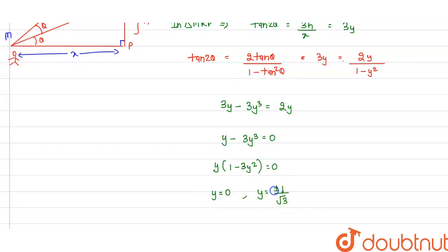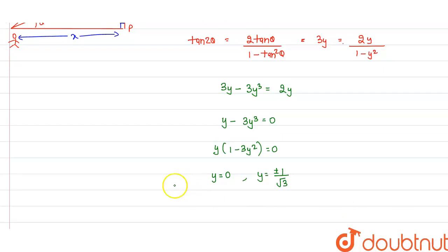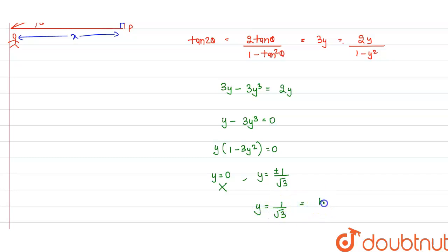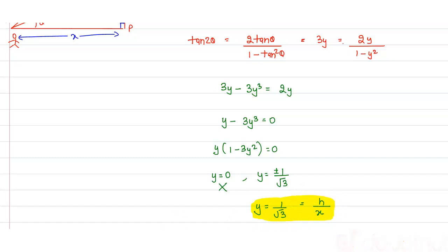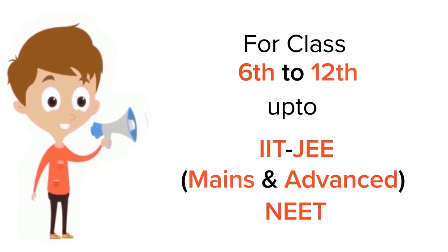My y value can't be negative because y equals height upon x, and height upon x can't be negative. It also can't be 0. So my y value equals 1 by root 3, that is, height upon x equals 1 over root 3. Thank you.